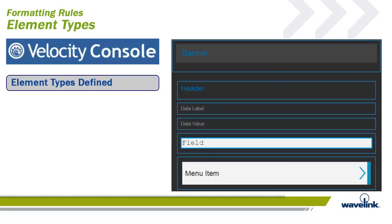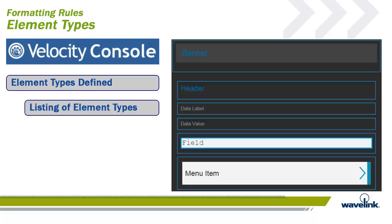Each screen consists of multiple elements, each of which are editable through the Velocity console, which offers multiple configuration options to create unique or branded styling applied via the app's built-in HTML and CSS rendering engine. Elements on the screen can be edited on a per-screen basis, meaning changes to a single screen element won't apply to all elements of a similar type. Or, through the use of themes, you can create formatting styles for each element type applied across all screens.